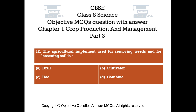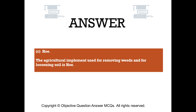Question number 12. The agricultural implement used for removing weeds and for loosening soil is. Option A: Drill. Option B: Cultivator. Option C: Hoe. Option D: Combine. The right answer is option C — Hoe. The agricultural implement used for removing weeds and for loosening soil is hoe.